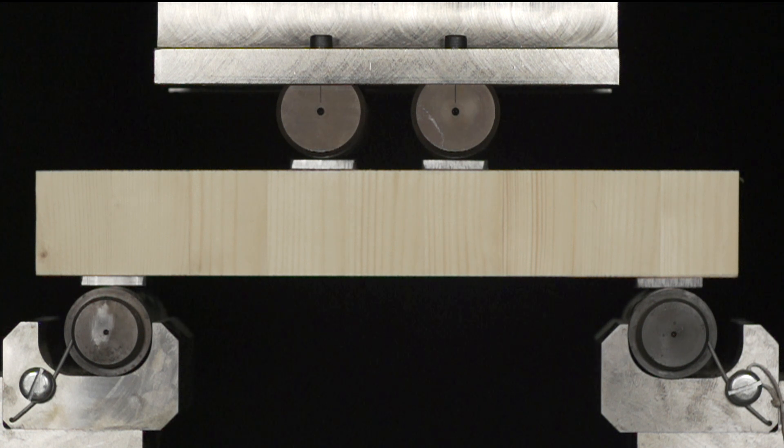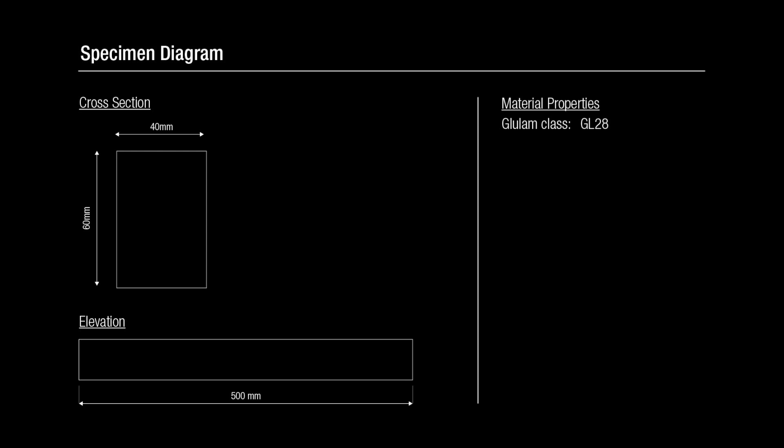This video shows a four-point bending test on a timber beam with the grain running perpendicular to the beam axis. The beam is made of glulam GL28.